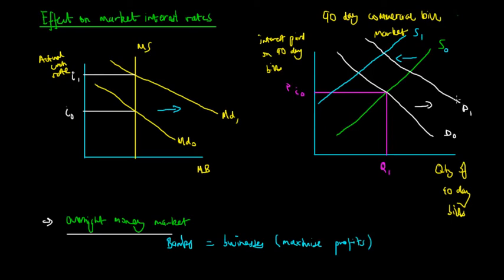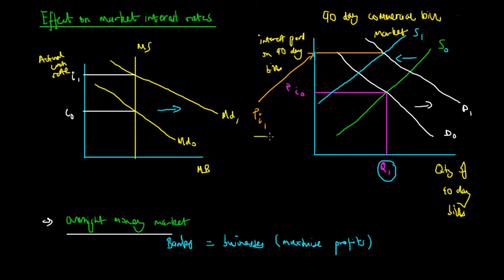The decrease in supply from S0 to S1 acts simultaneously with this increase in demand. There is a new equilibrium price at PI1. Although we don't know exactly what happens to the equilibrium quantity traded depending on the relative magnitudes of the shifts, we can determine conclusively that the interest paid on 90-day bills has actually increased. This means the change in the overnight money market's cash rate has flowed into, or spilled over into, the interest rate of the 90-day commercial bill market.